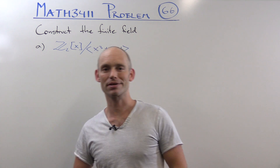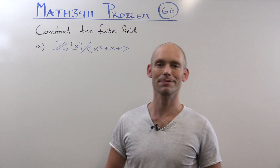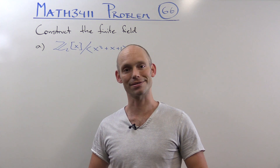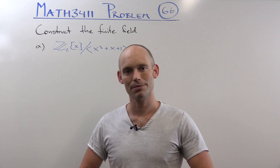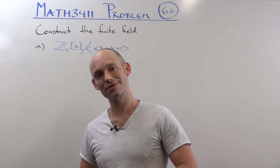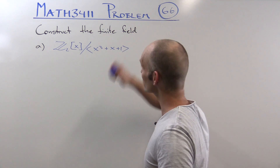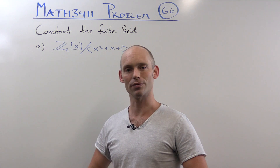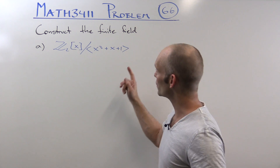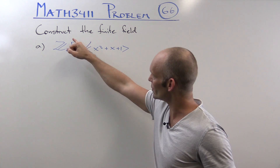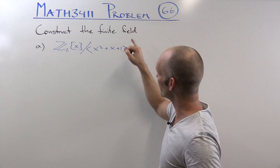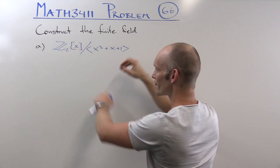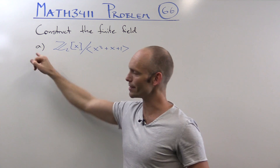Hi, and welcome to the University of New South Wales, and in particular the School of Mathematics and Statistics. My name is Thomas Britz, and I'll be looking at problem 66 from the course Math 3411. In this problem, we have to construct a finite field — in particular, the finite field from part A of the question.